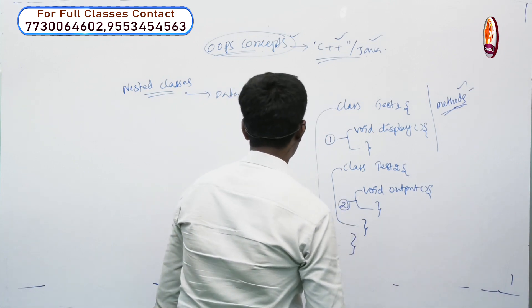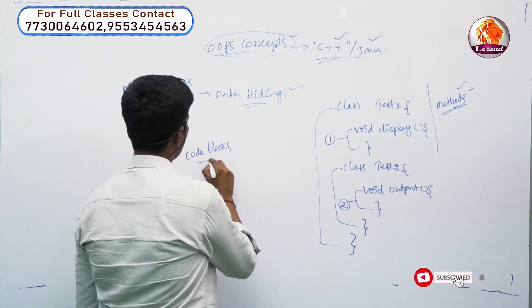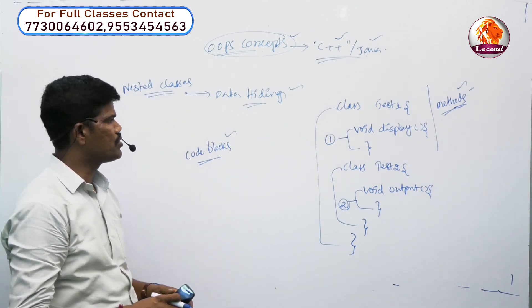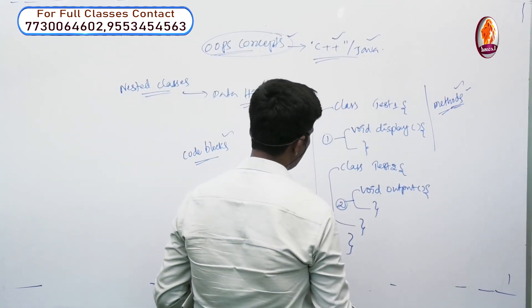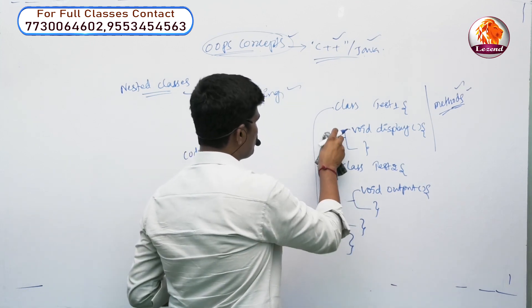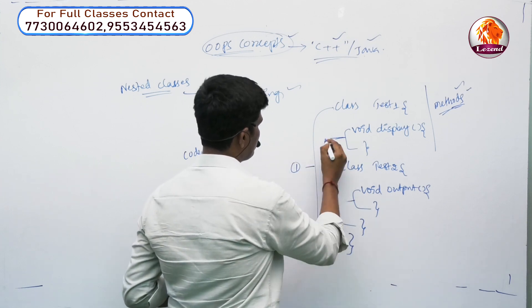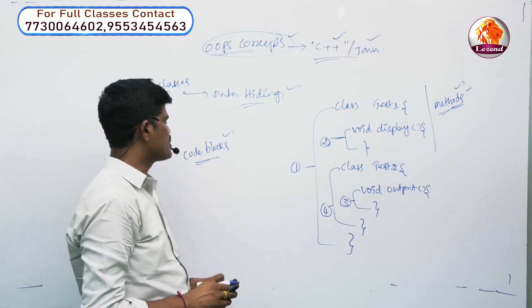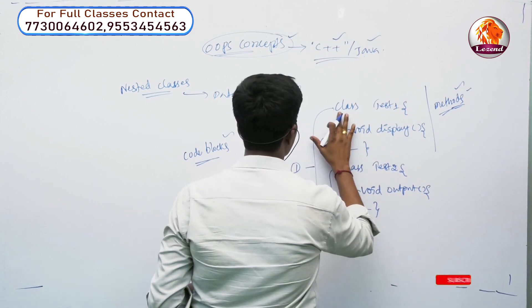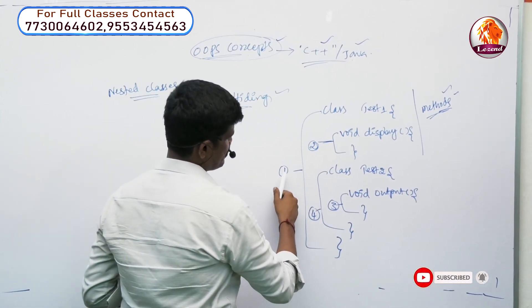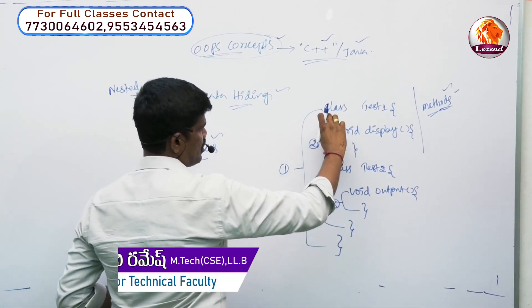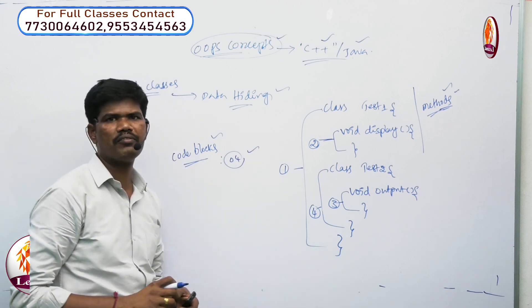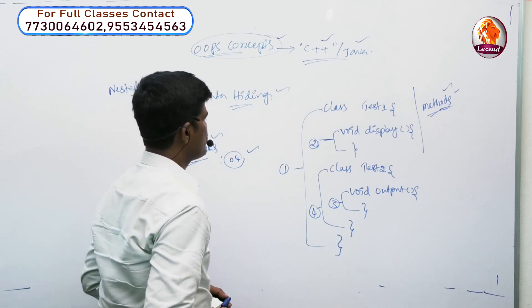Next, how many code blocks are there? In the given example or syntax, we have to count code blocks. The outer class is one code block, then the inner class is another code block, and each method body is also a code block. There are four total code blocks: outer class body, inner class body, and two method bodies.